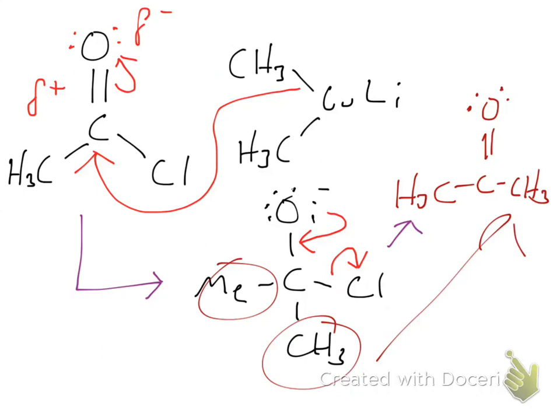So what have we made? Well, we've just made acetone. But don't forget that on top of this, we also kicked off this chlorine. So we're going to have plus Cl minus because we've created a chlorine anion now.